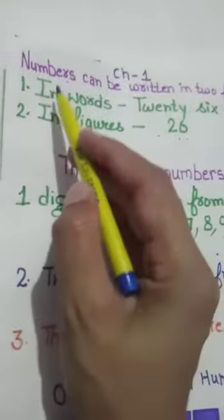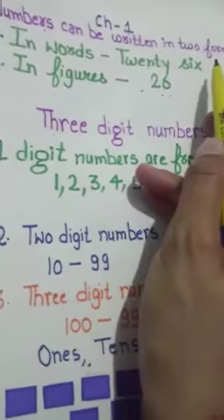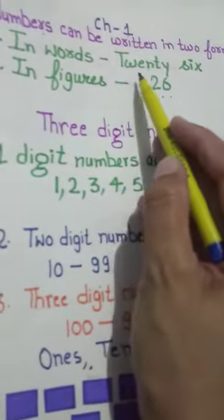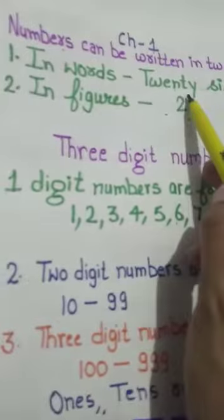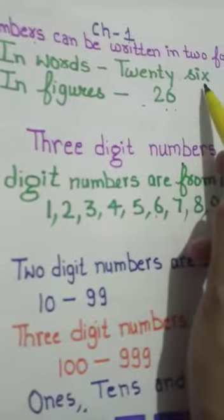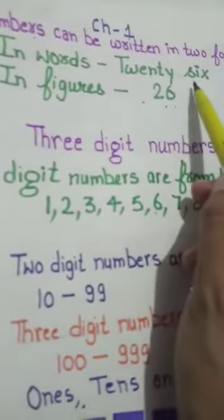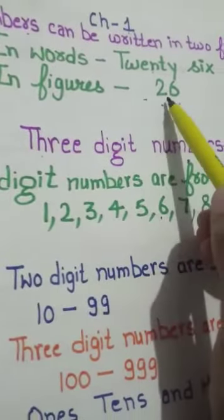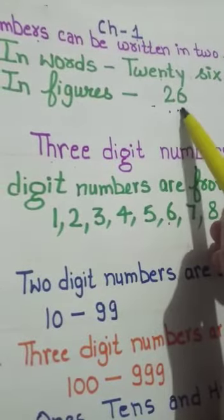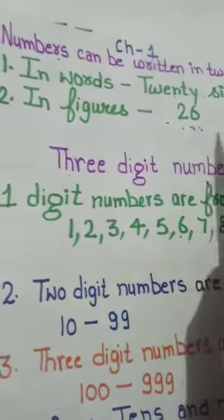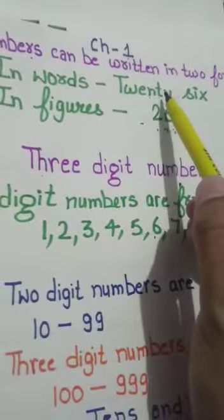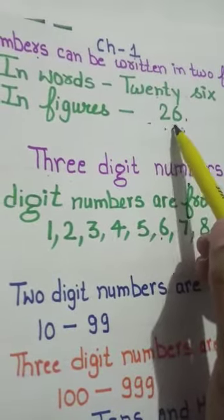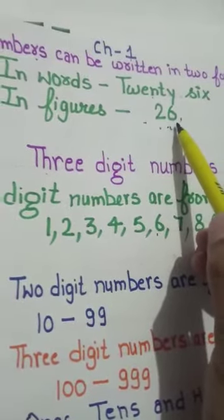As you know, children, numbers can be written in two forms. In words: twenty-six, and in figures: 26. When we write any number in words, that is called a number name, and when we write any number in digits, that is called numerals.